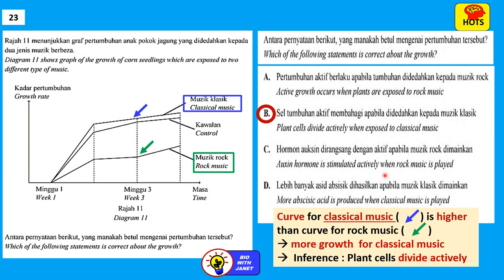Options C and D can be eliminated. We cannot say oxygen hormones are stimulated when rock music is played, and more abscisic acid is not produced with classical music. Perhaps the cells release more auxin hormone when exposed to classical music, which is why the growth rate is higher. Answer is B.